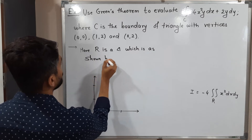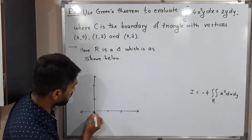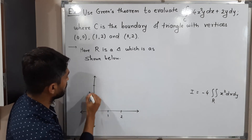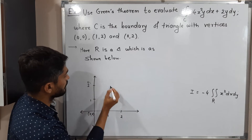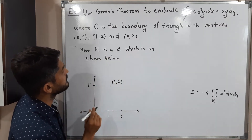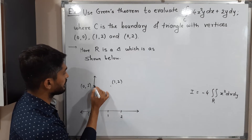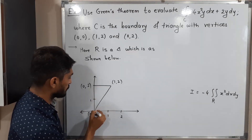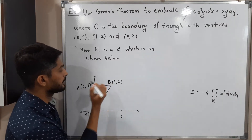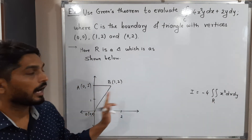The triangle has three vertices: O = (0, 0), A = (1, 2), and B = (0, 2). Let us join them to get the triangle. We have to solve the double integration over this triangular region R. For that, we need the equations of all the line segments forming this triangle.